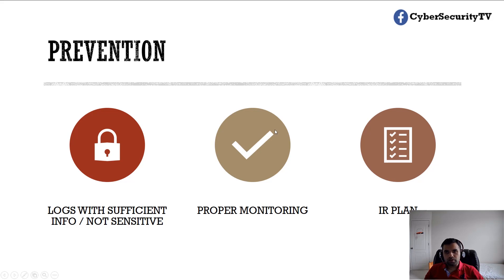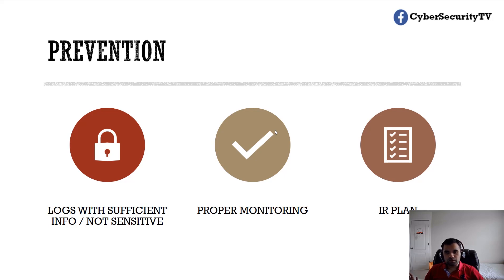The second prevention measure is proper monitoring. Once you have a good logging mechanism, you also need a good monitoring mechanism. Think of it like a building with security cameras everywhere — there's a security guard, but instead of watching the cameras, the guard is sleeping. Even after you have all this mechanism, if you're not monitoring the logs, it's of no use. Someone needs to be actively paying attention to the logs, regularly auditing them. Even if an attacker got past controls like IDS, IPS, or SIEM, you need to be watching.